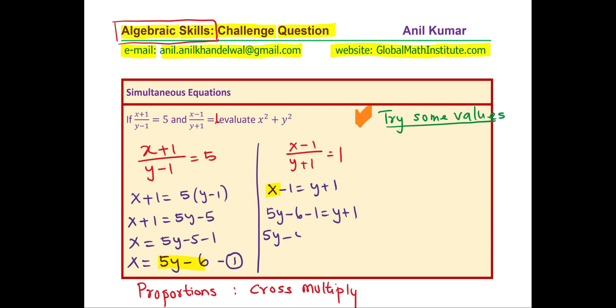So it is 5y minus y equals to 1 plus 6 plus 1 and here we get 4y equals to 8 and that gives you the value of y. So y basically is 8 divided by 4 and that gives you a value of 2.